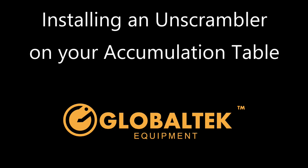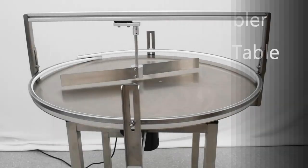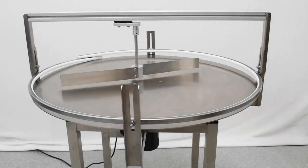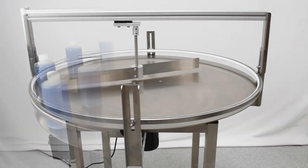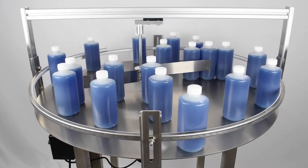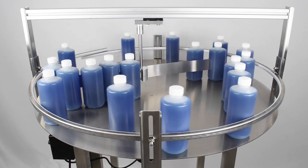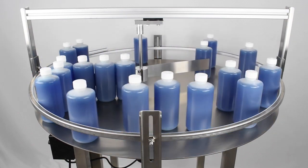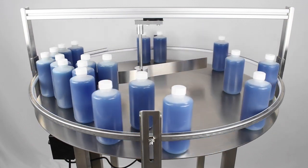In this video, we will be installing an unscrambler attachment on your accumulation table. If your packaging line includes a table to conveyor transfer, then you most likely need to install an unscrambler. An unscrambler sits in the middle of the accumulation table, pushing bottles to the outer edge of the table so that they can be picked up and transferred to the conveyor.